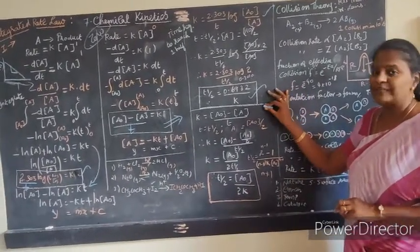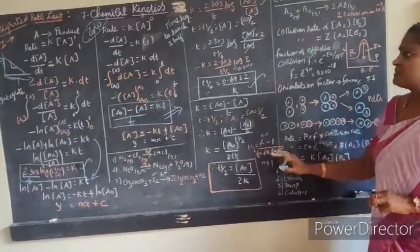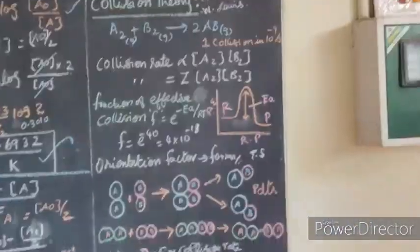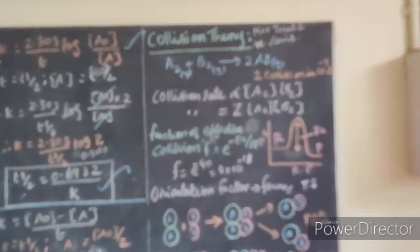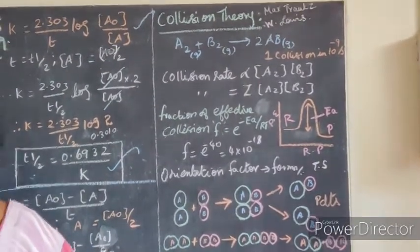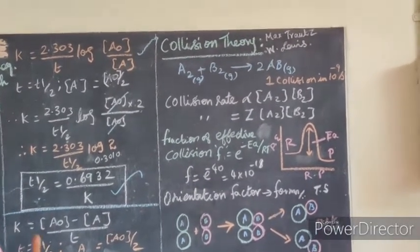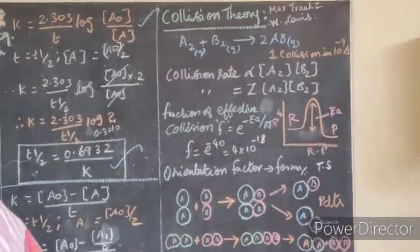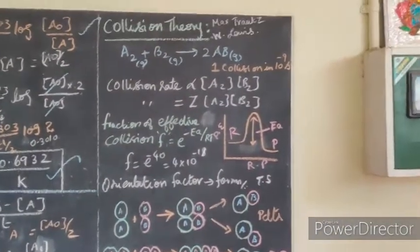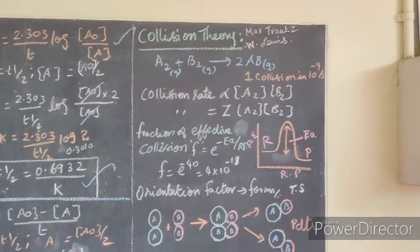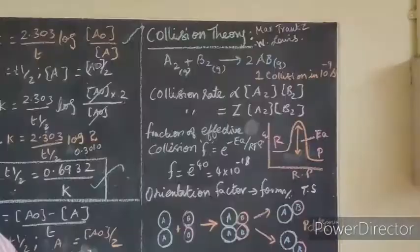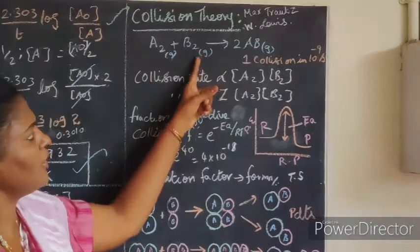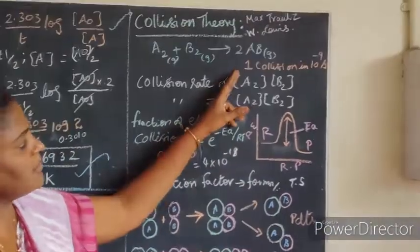That is all about the half-life period for zero order and first order reactions. Next we move on to the last important concept in this unit - the collision theory. Collision theory was first put forward by Max Trautz and William Lewis in the year 1916 and 1918 independently. This collision theory is based on kinetic theory of gases. We are going to consider the rate of the reaction - considering two molecules A₂ plus B₂ combining to form 2AB as reactant and product molecules.